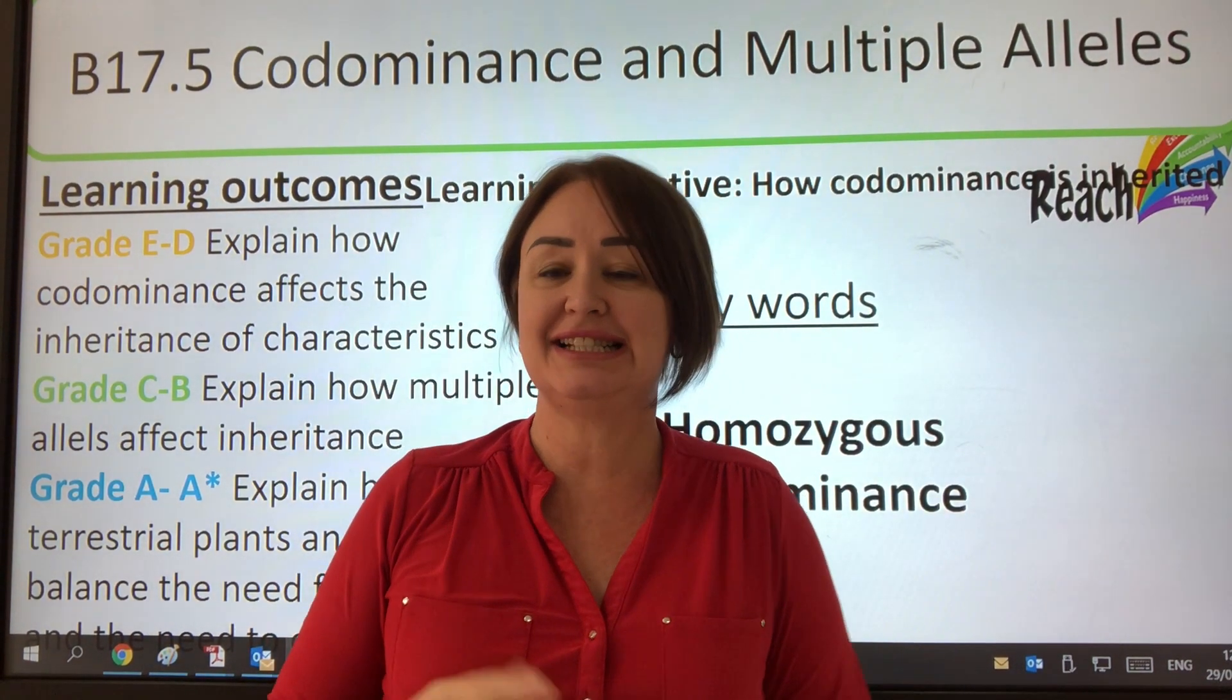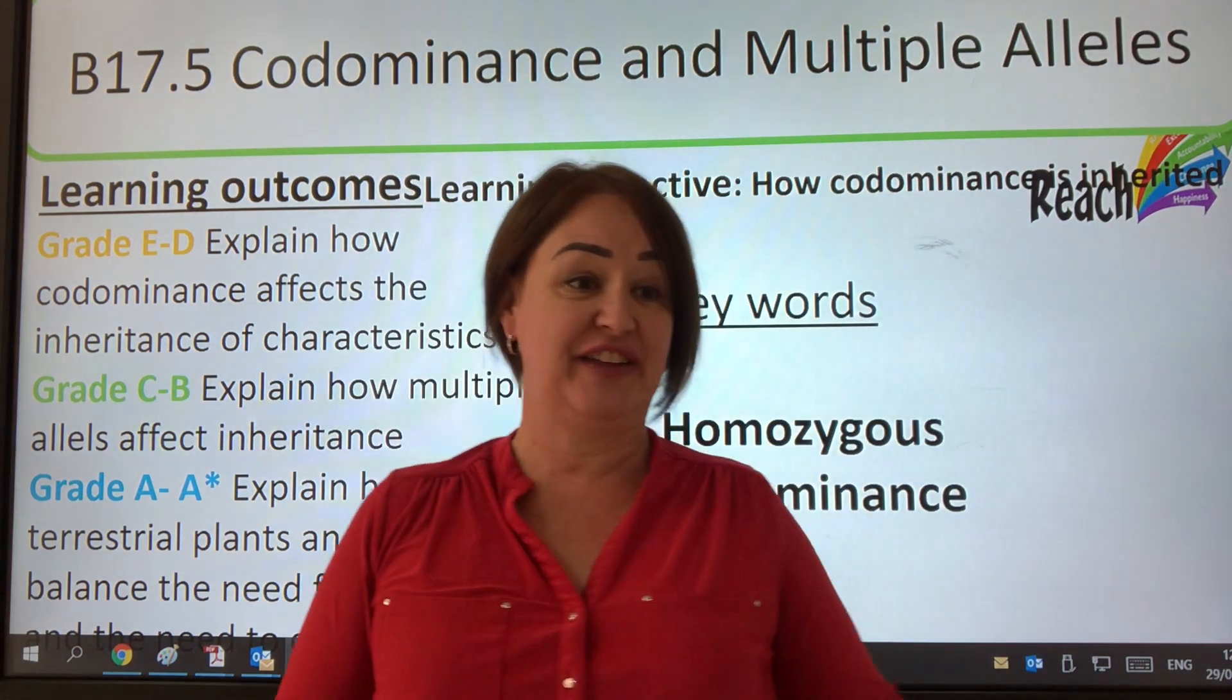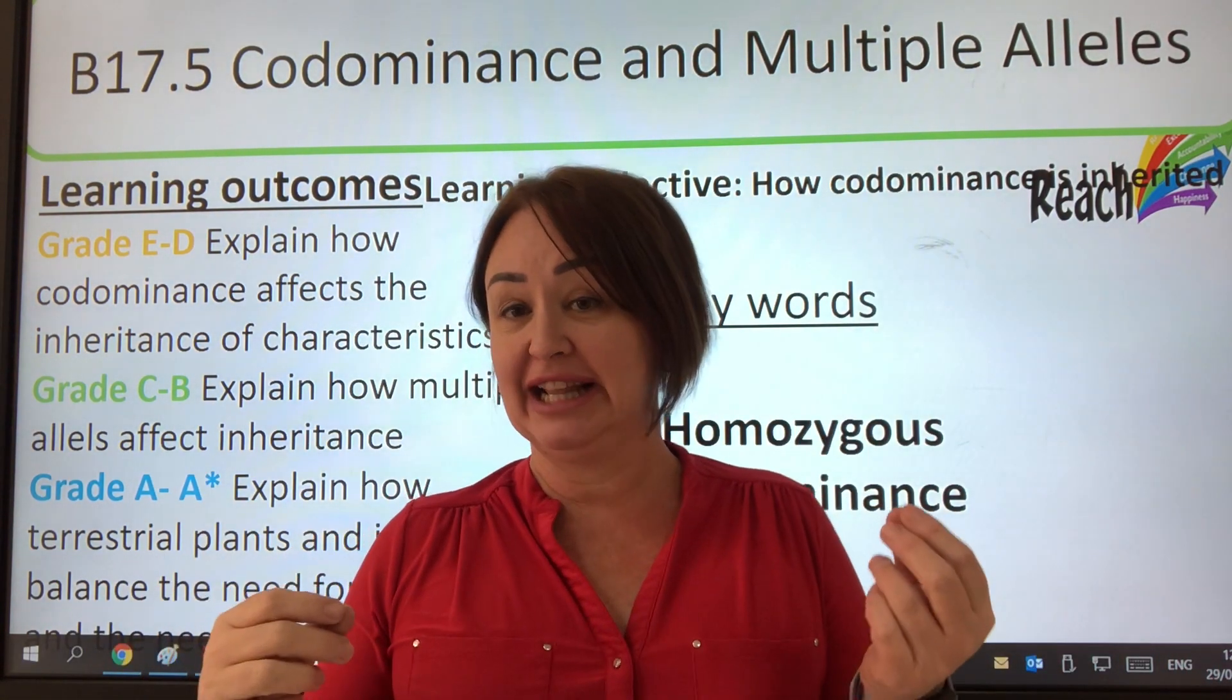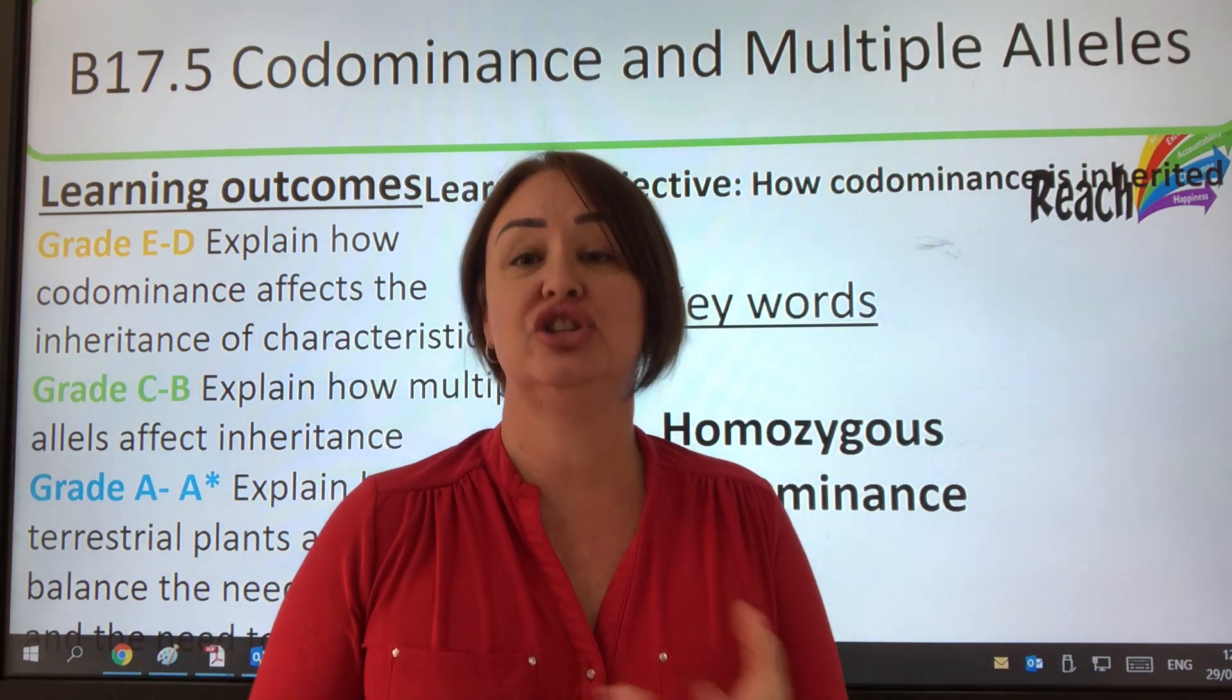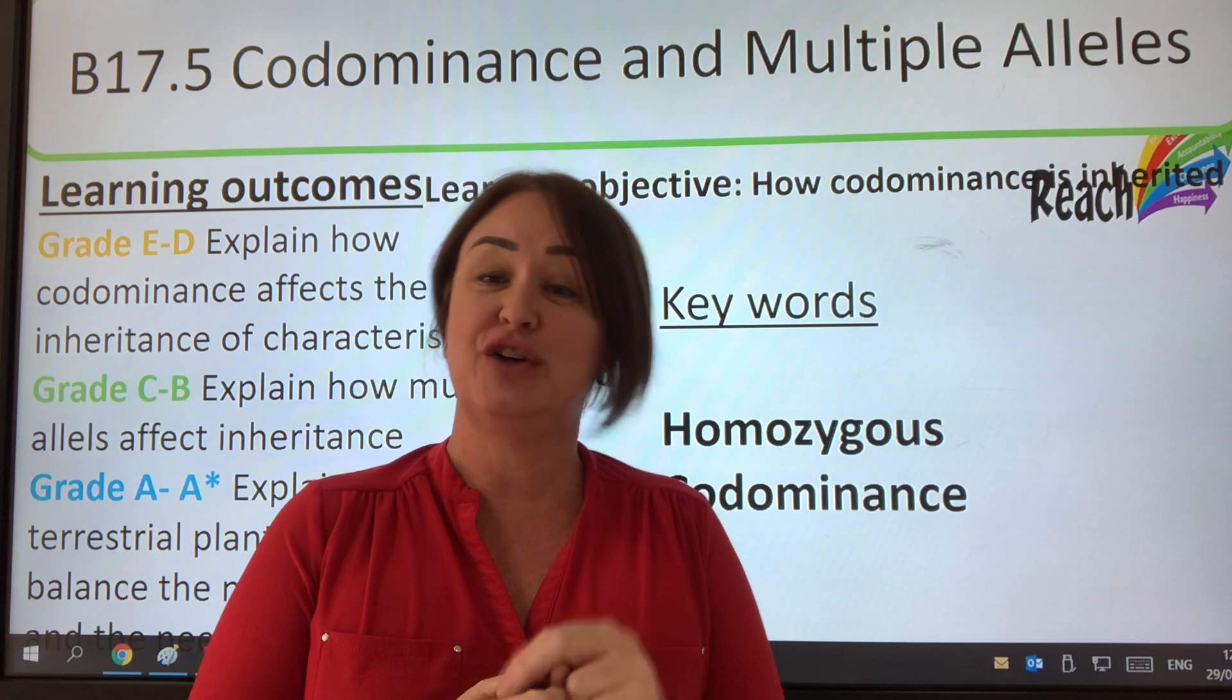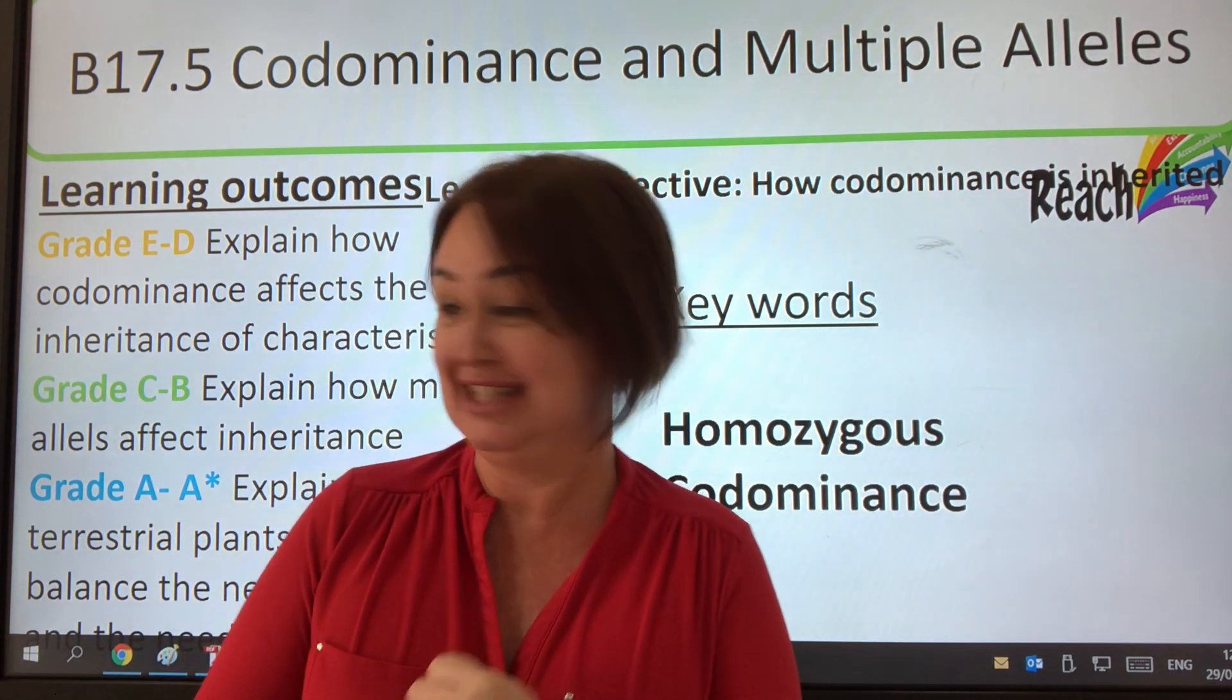Hi, we're looking at co-dominance. It's 17.5 in A2 in the AQA specification. What do we mean by co-dominance? We're talking about when one allele is equally dominant to the other. We're going to start off with an example first where we're just looking at two alleles, and then we'll move into three alleles.